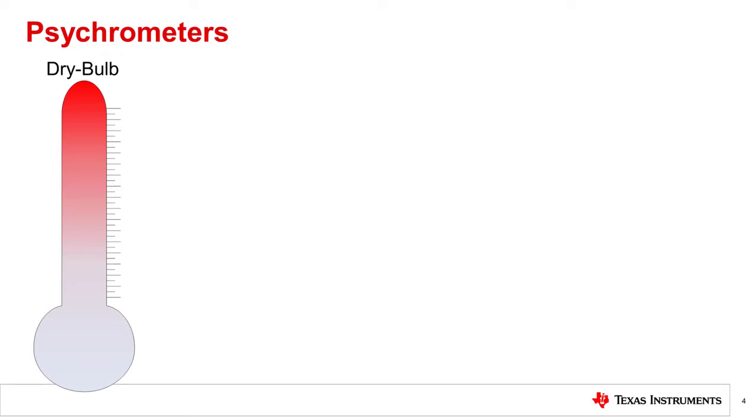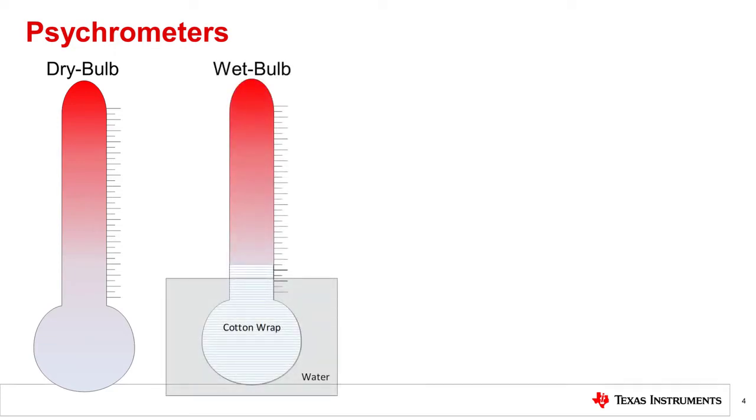As the name implies, this tool starts with a dry bulb thermometer, which is typically shielded in some way from radiation, and a wet bulb thermometer, which is wrapped in a cotton wick or sock that is wet in order to allow the effects of evaporative cooling to take place. Because one of these thermometers is being cooled by the evaporation of moisture and one is not, there will be a measurable temperature difference between the two.